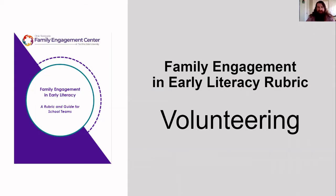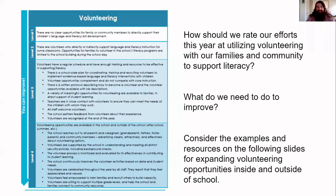The third area of family engagement in the rubric is volunteering. As a team, have each individual read completely through all four levels of the rubric. Each team member should identify on their own the level that best describes the current practices of the school.